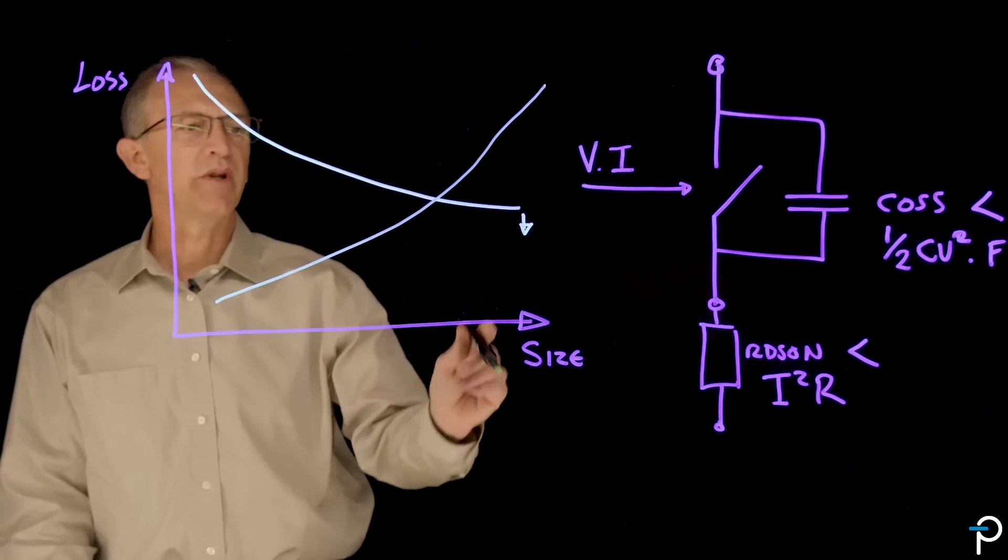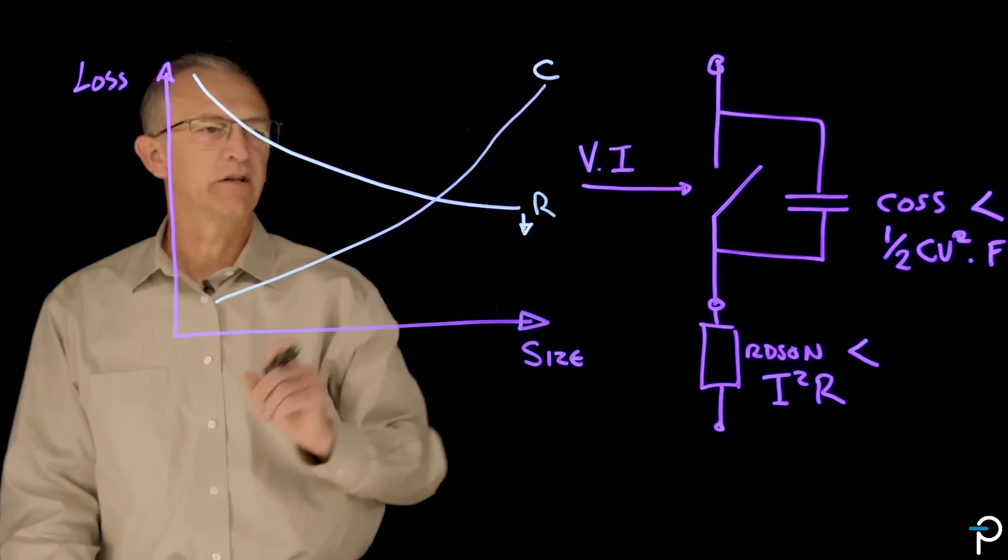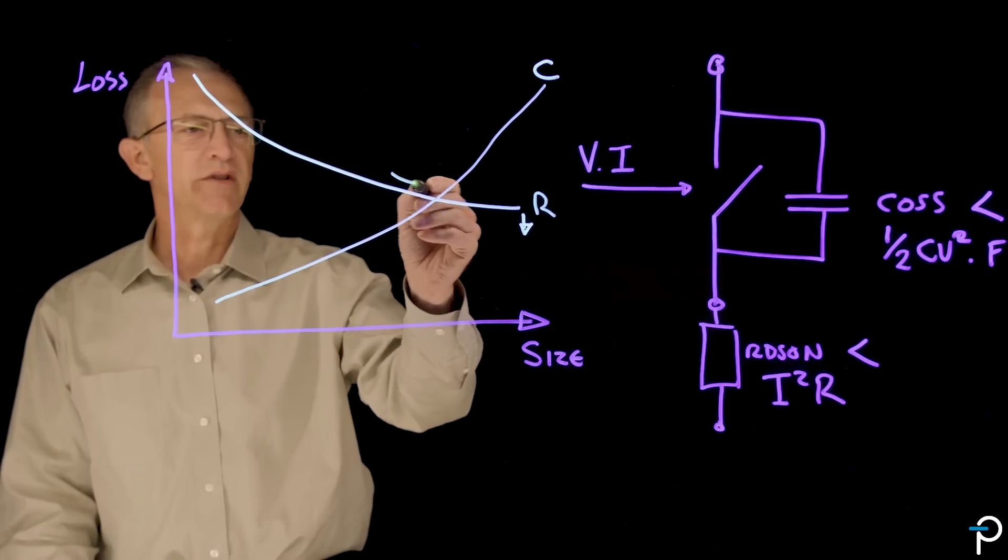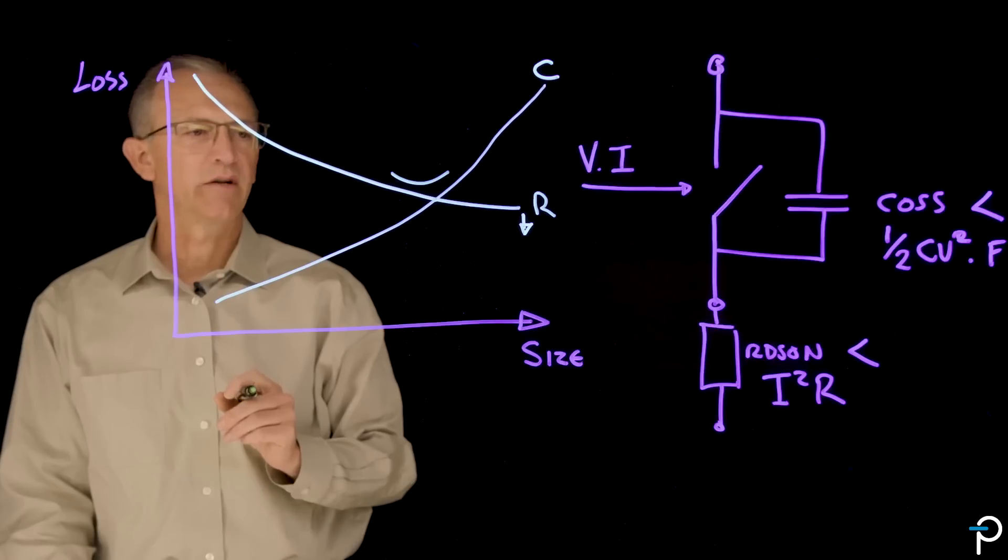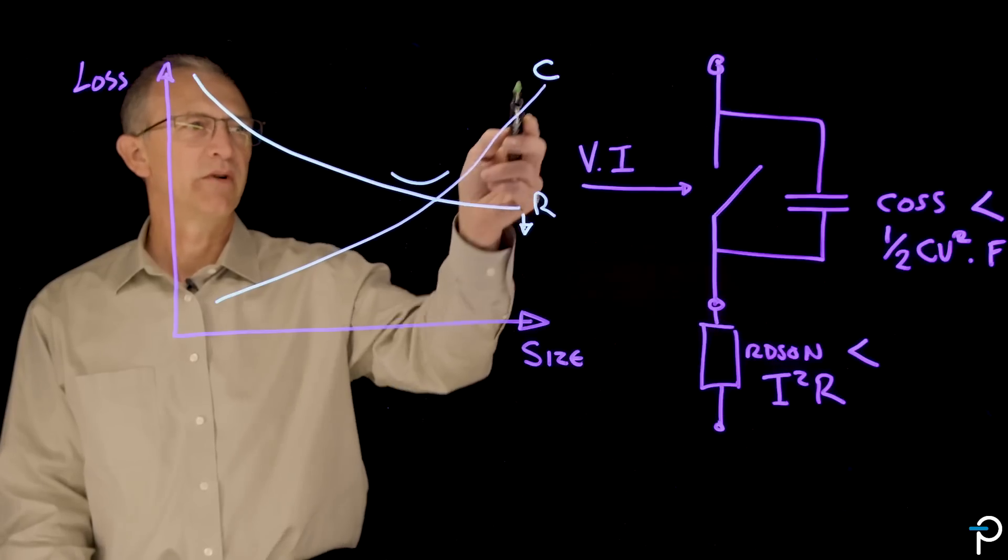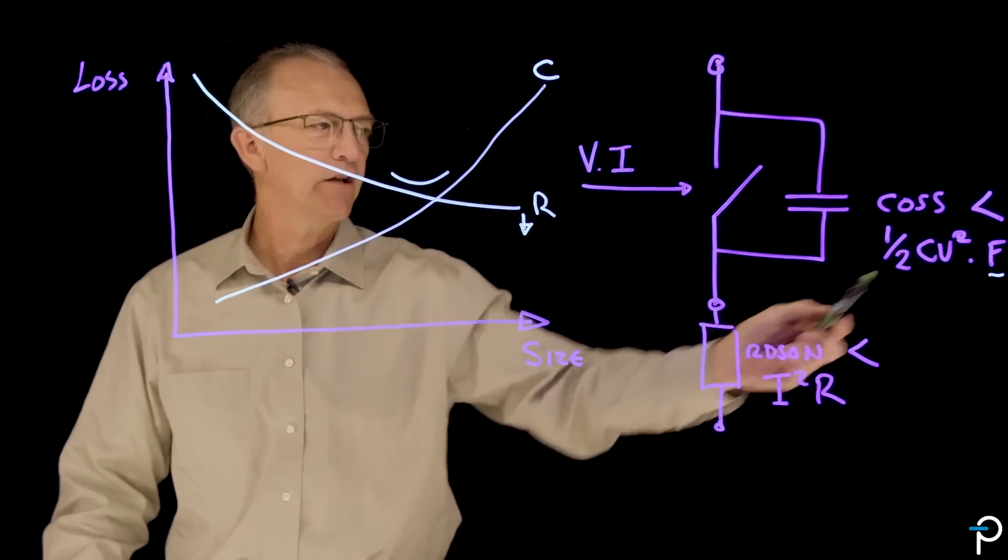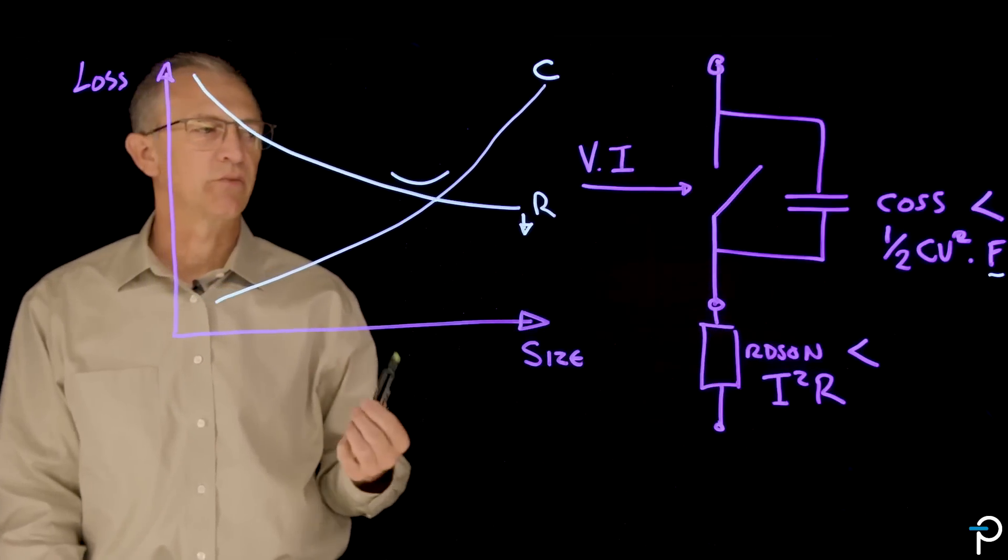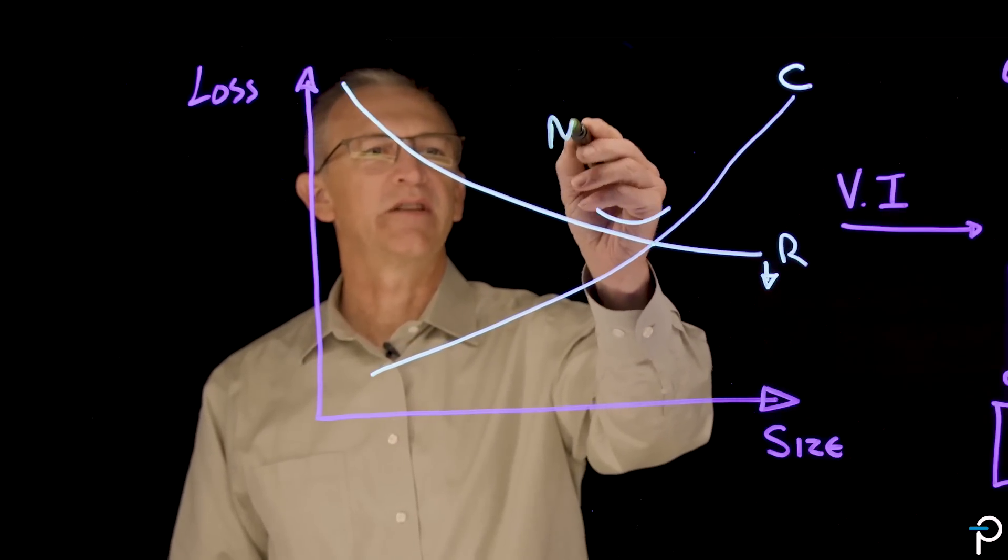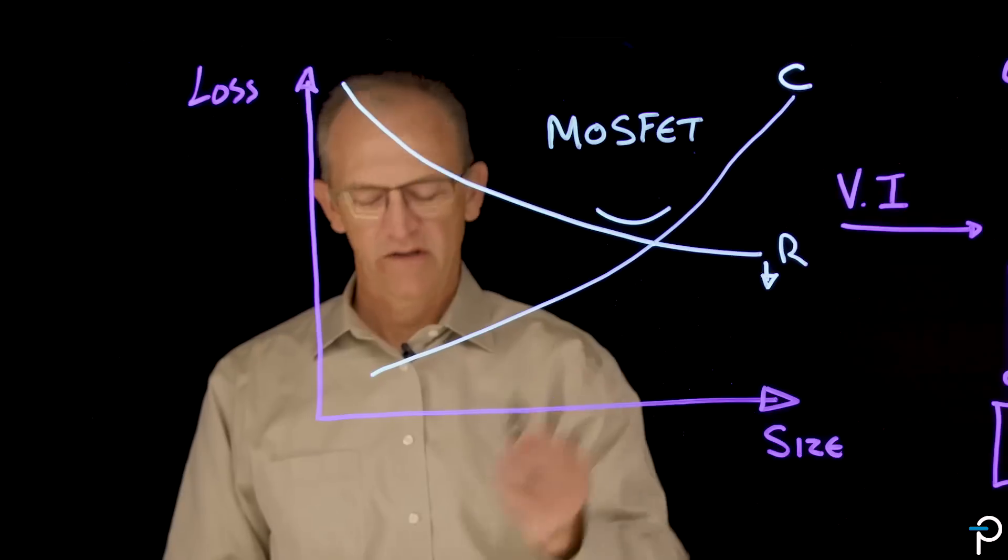So it turns out that the losses due to capacitance go up with size. So at some point, the best you can do is at this point here where they cross. At that point, you have a minimum of capacitance and resistive losses combined. And of course, that's affected by the frequency at which you choose to switch. So the green here, let's imagine the green is a standard MOSFET.